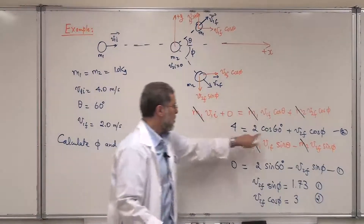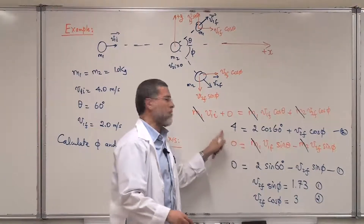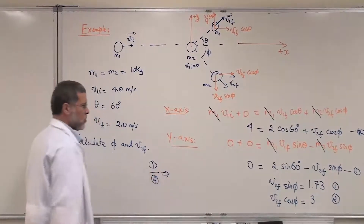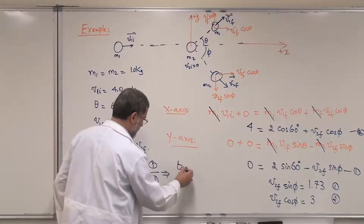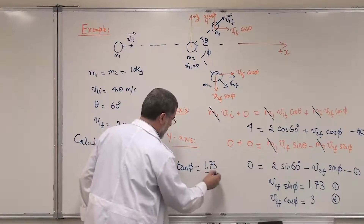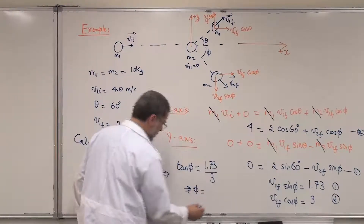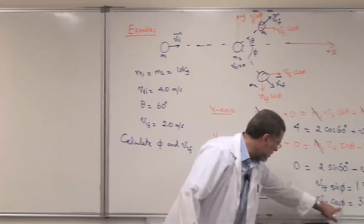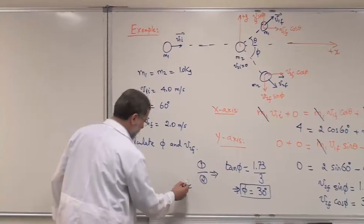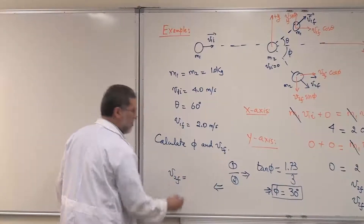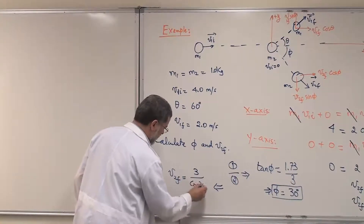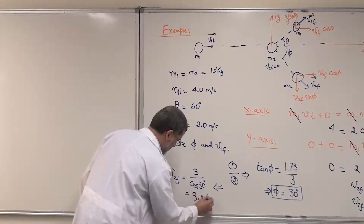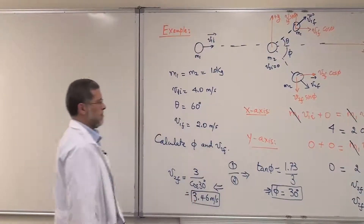Dividing equation one by equation two gives tan φ = 1.73 / 3, which gives φ equal to 30 degrees. Substituting back, V2 final = 3 / cos30° = 3.46 meters per second. So the angle phi is 30 degrees and V2 final is 3.46 meters per second.